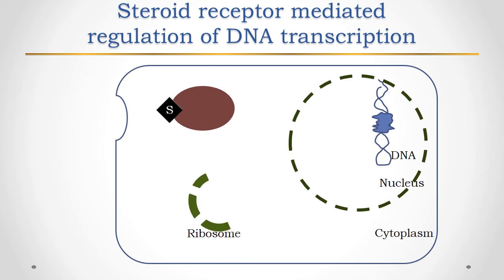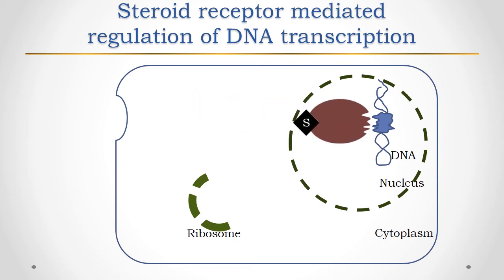The steroid hormone, denoted here as 'S', first penetrates the cell to combine with the steroid binding site of the receptor. This binding then unfolds the receptor and exposes the normally masked DNA binding site.